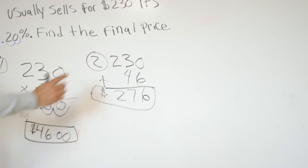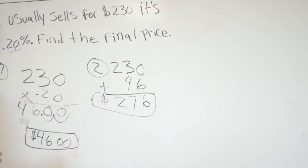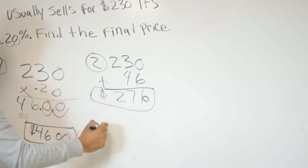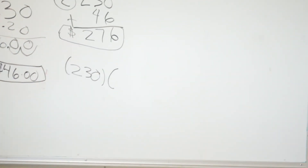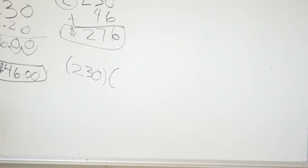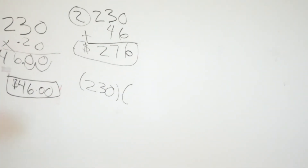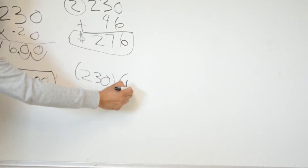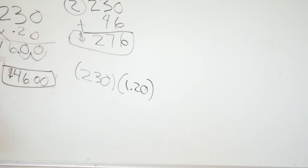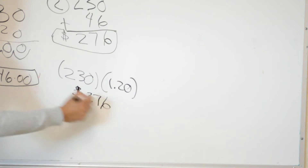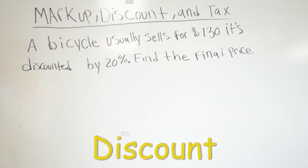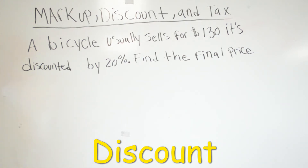Another way to solve the same problem: take $230 and multiply by the full percentage after markup. It's not just 20% — you add 100% plus 20%, which gives you 120%, or 1.20 as a decimal. When you multiply $230 times 1.20, you get the same answer: $276.